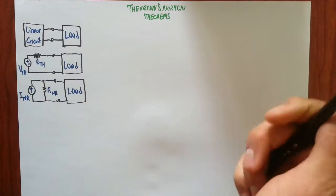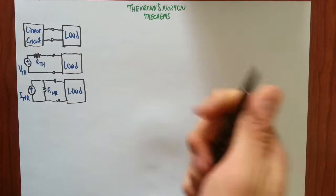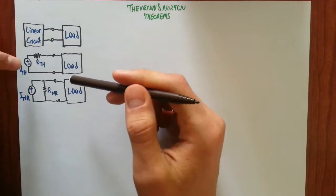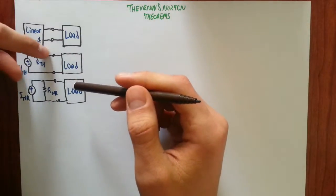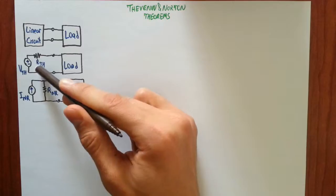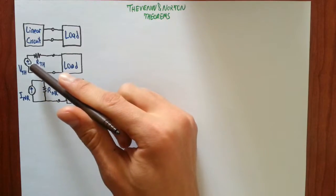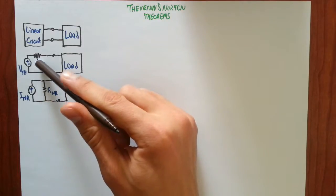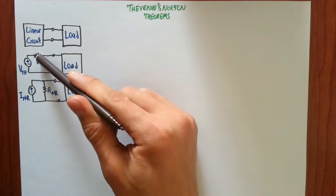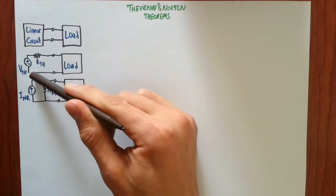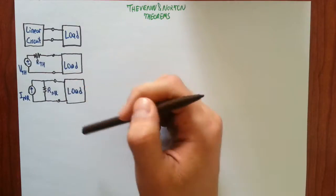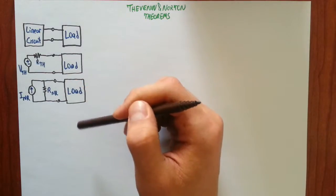If you have noticed so far, if you apply source transformation to this Thevenin equivalent circuit and turn it into a current source, what you get is the Norton equivalent.